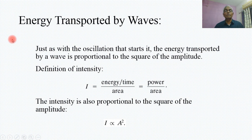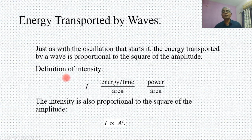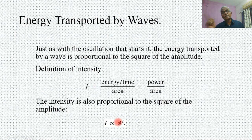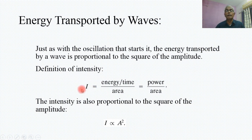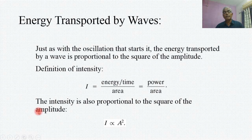Now, what about the energy transported by waves? The energy transported by a wave is directly proportional to the amplitude — that means the intensity. Intensity can be written as energy per time divided by area. Energy per unit time is called power. So intensity equals power upon area, and intensity (I) is directly proportional to the square of the amplitude.